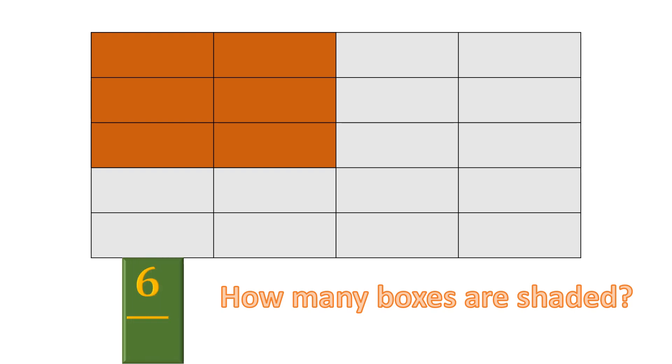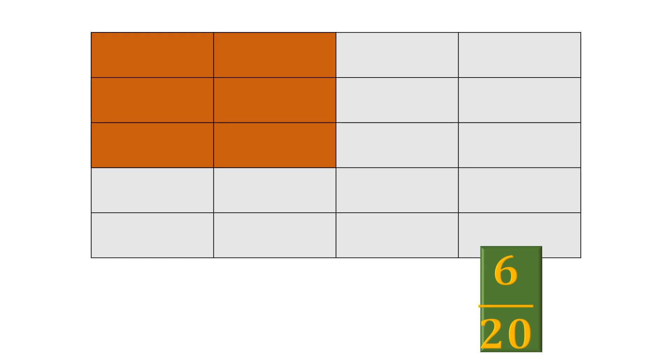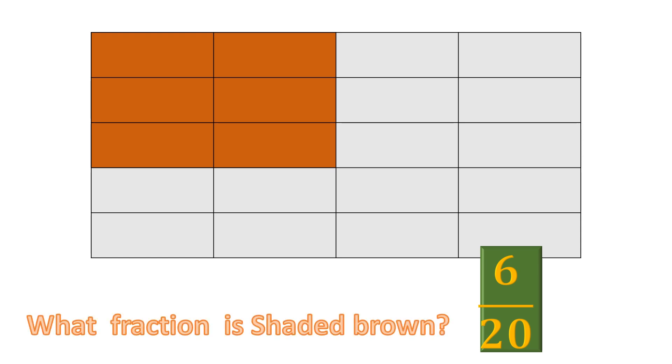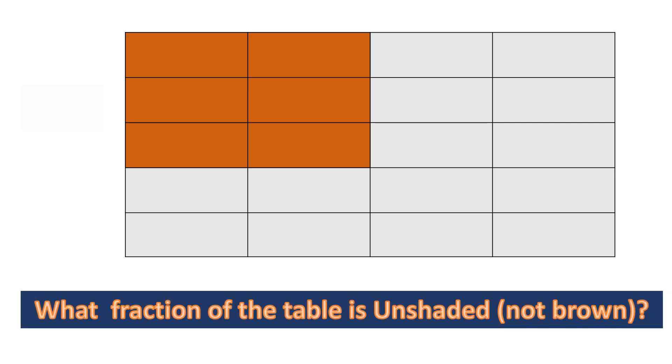Now let's shade some of the boxes brown. How many boxes have been shaded brown? There are two columns and three rows, so six boxes have been shaded brown. What fraction of the table is shaded brown? Six is the numerator, so the fraction shaded brown is six over twenty — because twenty is the total and six have been shaded. Can you tell me what fraction of the table is unshaded? Please try it yourself and write your answer in the comment section. See you in the next video. Goodbye!